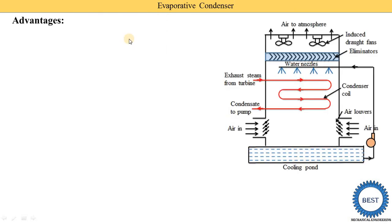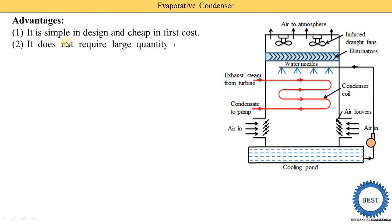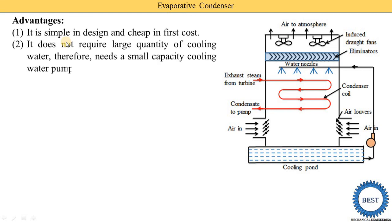The advantages of the evaporative condenser are: it is simple in design and cheap in first cost. It does not require a large quantity of cooling water, and therefore needs only a small-capacity cooling water pump. Since a smaller pump is needed, electricity consumption is also reduced. Its operation cost is less because the pump size is reduced and the electricity bill is lower.